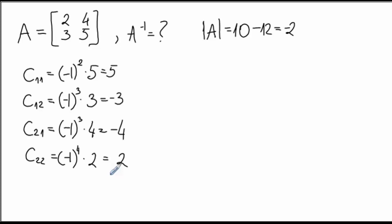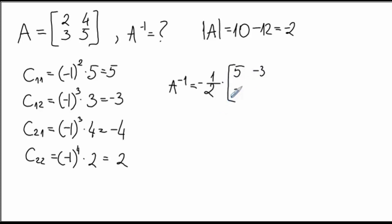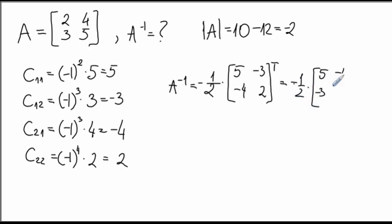According to the definition, the inverse matrix is going to be 1 divided by the determinant times the matrix of cofactors. The cofactor matrix has entries C11, C12, C21, and C22. This matrix has to be transposed, which means the first row becomes the first column and the second row becomes the second column. So 5 and negative 3 go into the first column, and negative 4 and 2 go into the second column.